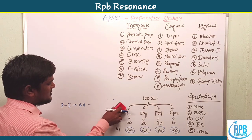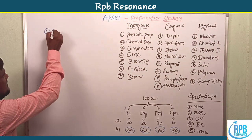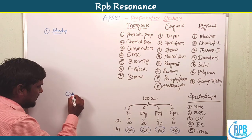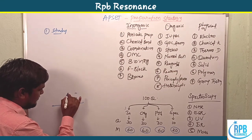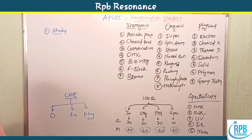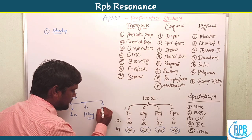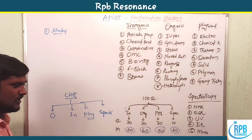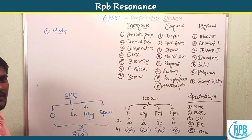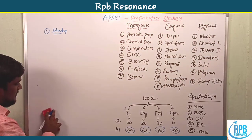Now let's move on to the preparation tips for EPICET 2020 chemistry. The first thing is to study each and every topic. Chemistry is generally classified into three types — organic chemistry, inorganic chemistry, and physical chemistry — but nowadays I introduce spectroscopy as a fourth separate category, covering all 200 marks of the chemistry exam.